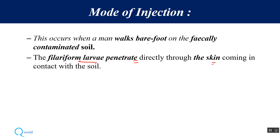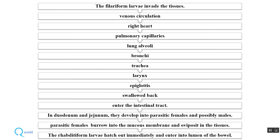When we walk barefooted on fecally contaminated soil, the filariform larvae enter the venous circulation, travel to the right side of the heart, then to the pulmonary capillaries, and reach the lungs. From there they enter the bronchi, trachea, larynx, and epiglottis, are swallowed back, and enter the intestinal tract, traveling to the duodenum and jejunum where they become adult worms.